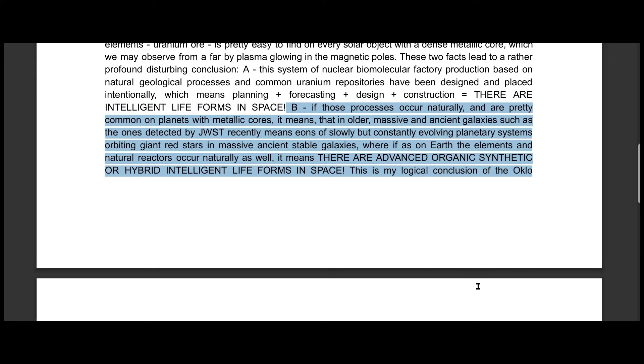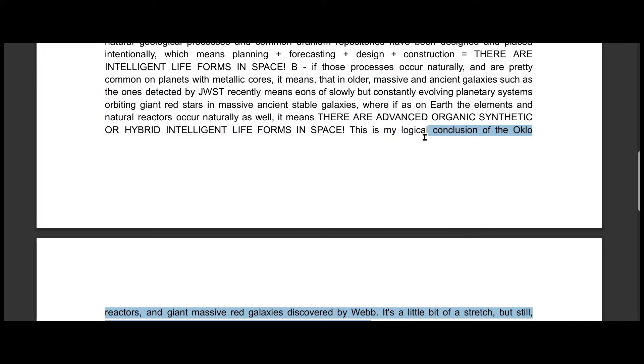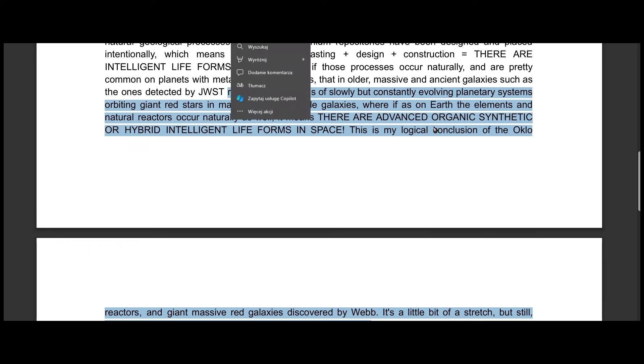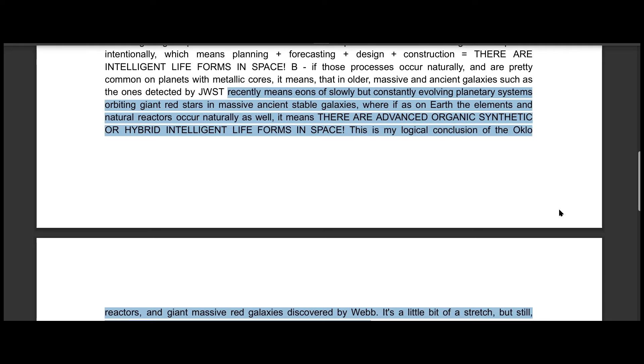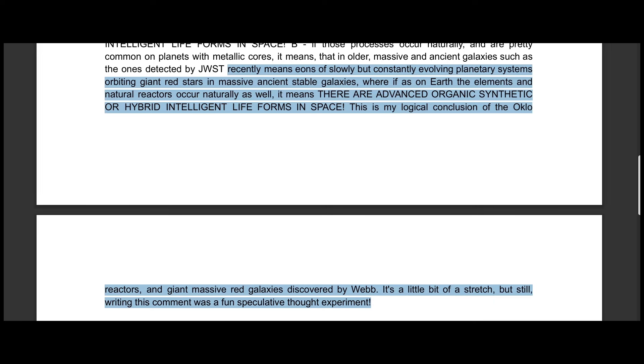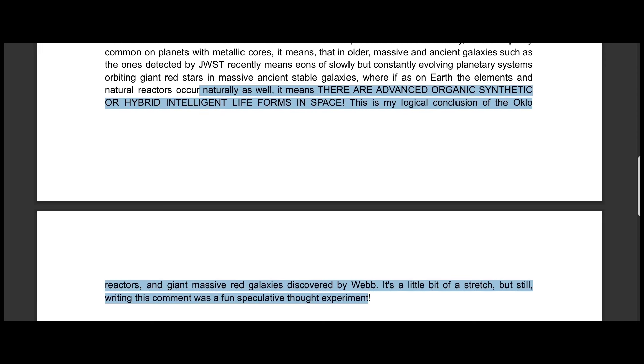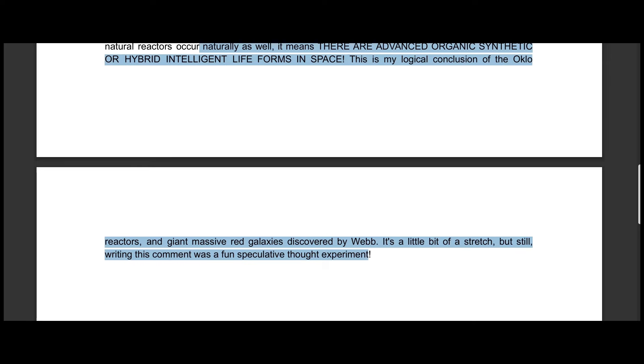B, if those processes occur naturally and are pretty common on planets with metallic cores, it means that in older, massive and ancient galaxies such as the ones detected by JWST recently, there are eons of slowly but constantly evolving planetary systems orbiting giant red stars in massive ancient stable galaxies, where if as on Earth the elements and natural reactors occur naturally as well, it means there are advanced organic, synthetic or hybrid intelligent life forms in space. This is my logical conclusion of the Oklo reactors and giant massive red galaxies discovered by Webb.